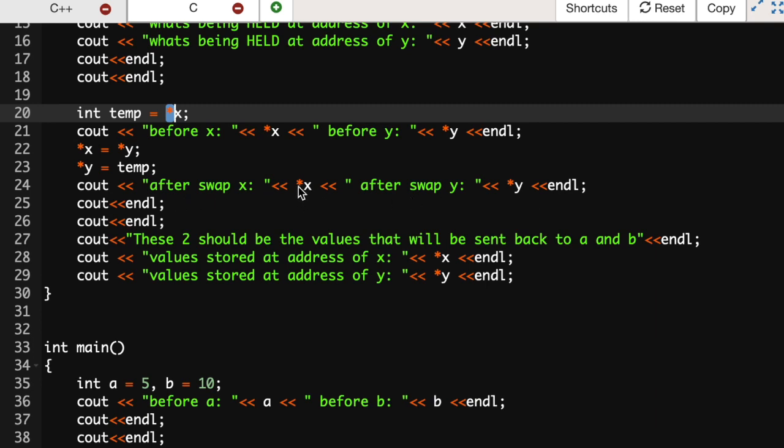I have a print statement to show that x and y were actually swapped. Again we're dereferencing so we can actually see the contents there, so we can see that that 5 and 10 were actually changed.